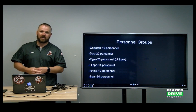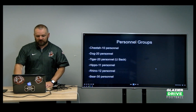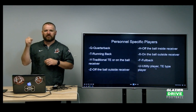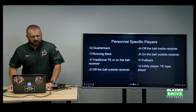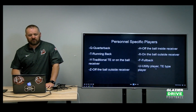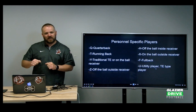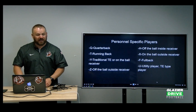So I'm a big believer in going ahead and changing personnel. As a coach, you have to do a good job of protecting your plays within each personnel grouping and running multiple plays out of them. Each position has a specific name: Q is the quarterback, T is the running back. Y is a traditional tight end or on-the-ball receiver. Z is an off-the-ball receiver. H is an off-the-ball receiver. X is a backside or on-the-ball receiver. F is fullback. And then we use a U-back — a utility player, a tight-end-type kid who can play wing, block, and get into routes.